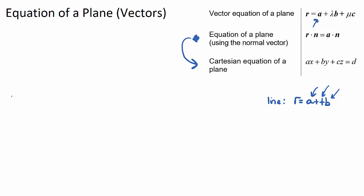A is still a fixed known position on our plane. The two parameters lambda and mu are now attached to B and C, where B and C are two direction vectors. We need two direction vectors to work out the equation of a plane, and they must be non-parallel to each other but both parallel to our plane.